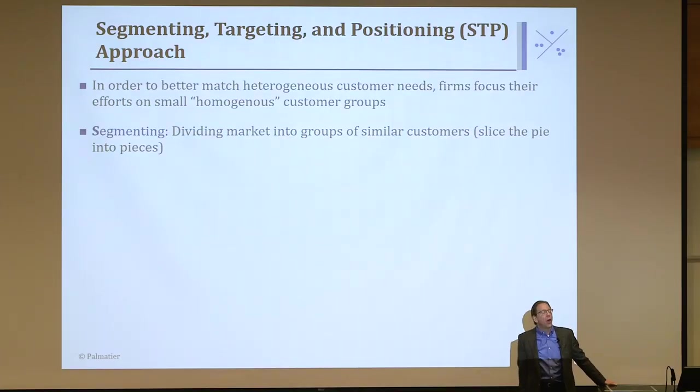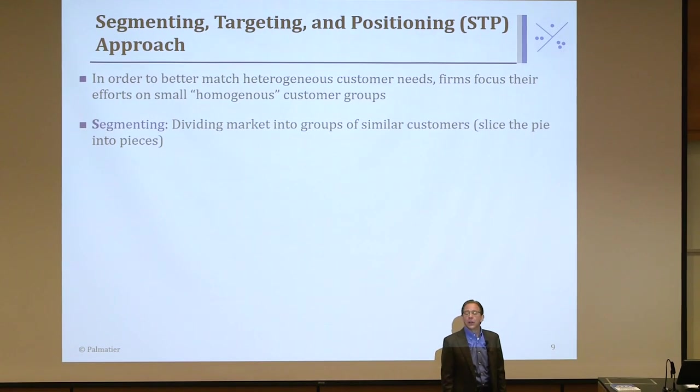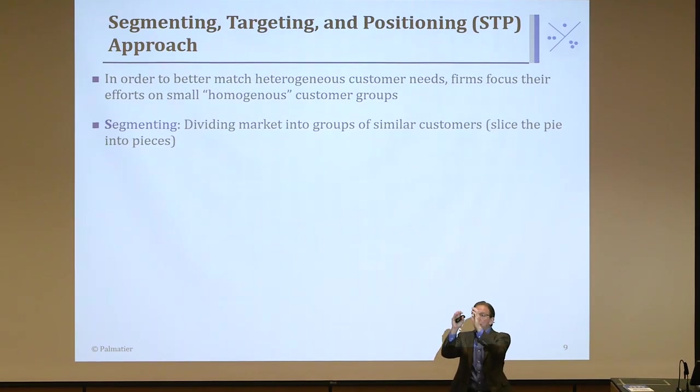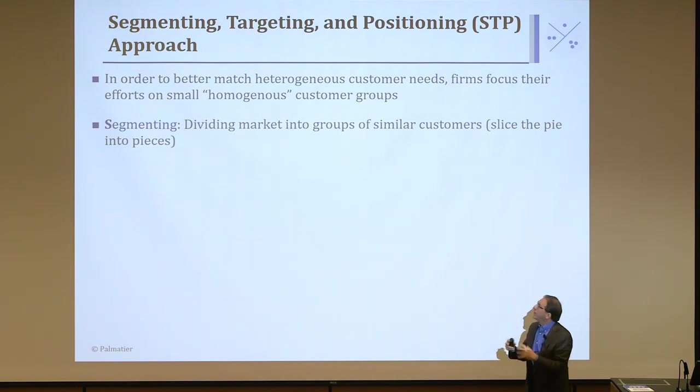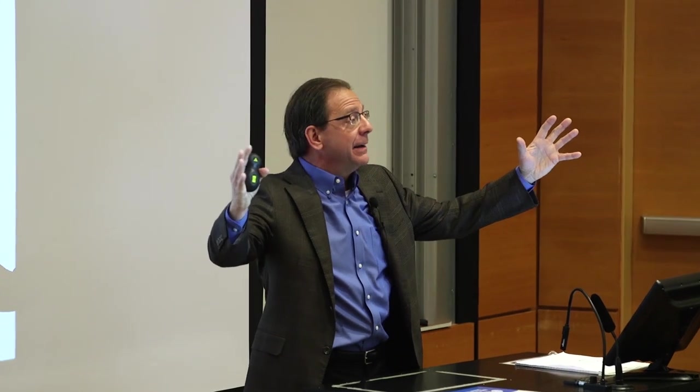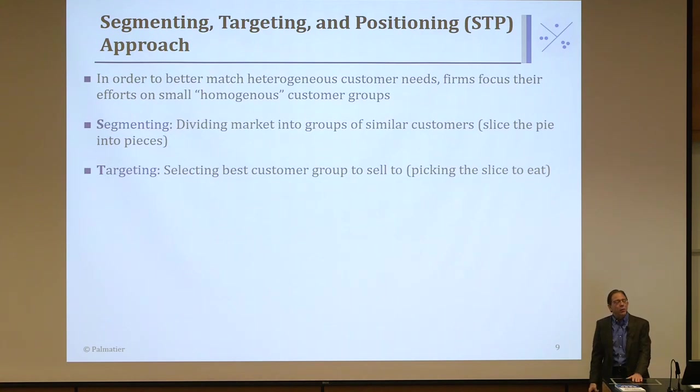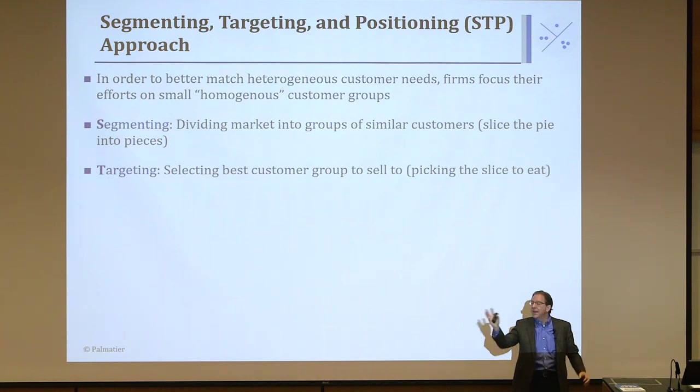Let's assume this audience is all the automotive market in the world. The first step is making you all sit next to each other based on your desires and needs in an automobile — we might have the minivan people, the people that want trucks, the people that want sports cars, family sedans. We group them. That is segmenting: dividing the markets into groups of similar customers. If you want to think of the market as a piece of pie, segmenting is slicing the pie into pieces. The second step is targeting — selecting the segment to focus my business on. As an automotive manufacturer, I might decide I can't make cars for every segment; I'm going to go after the minivan segment. That would be selecting what piece of pie you want to eat.